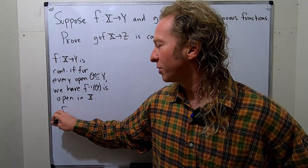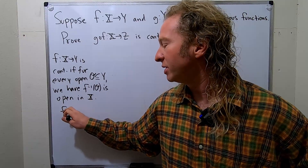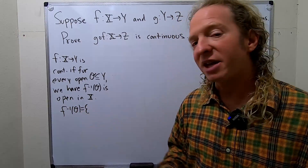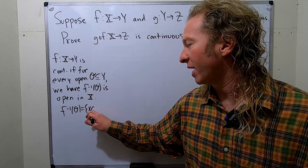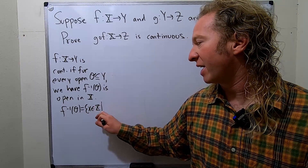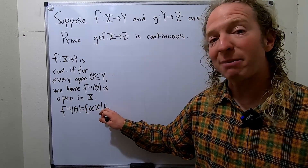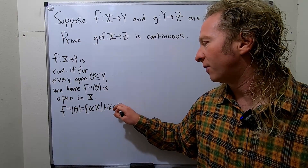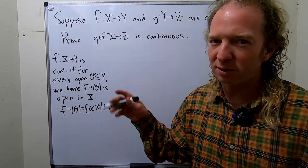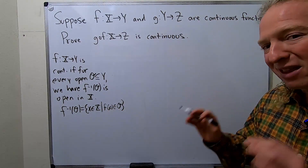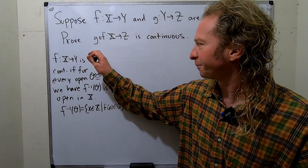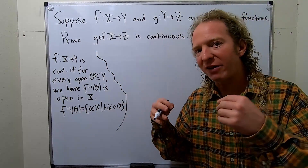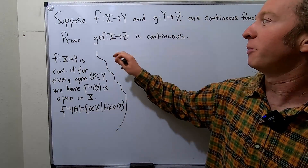If you're wondering what the inverse image is, the inverse image of O is the set of all x's in capital X such that f of x gets mapped to O. We're not going to need the explicit set definition in this proof, because we're going to use something a little bit more high level, and I think it should work out.